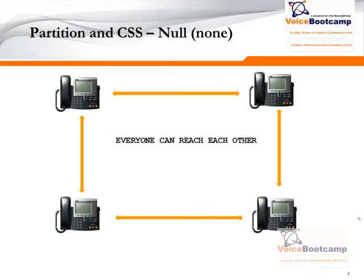Here is a scenario of null partitions, or none. For phones registered to Call Manager, nothing else has been configured. So therefore, all the phones' extensions belong to null partition, and all the phones have a null calling search space assigned. So therefore, every phone can reach each other.